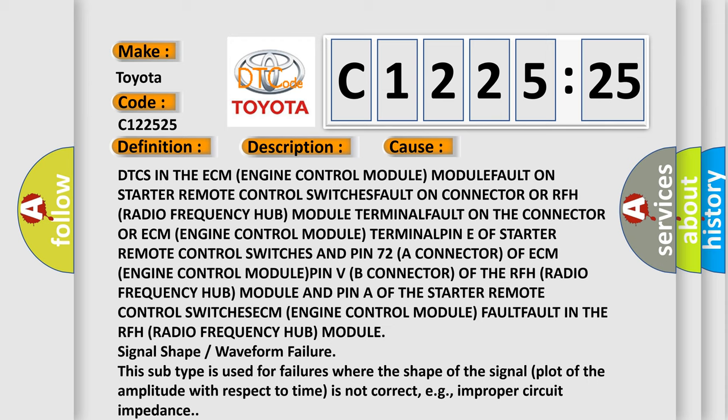The starter remote control switches and pin 72A connector of ECM (Engine Control Module), TERMINAL PINVB connector of the RFH (Radio Frequency Hub) module, and PIN of the starter remote control SWITCHES. ECM (Engine Control Module) FAULT or FAULT in the RFH (Radio Frequency Hub) module signal shape or waveform failure.